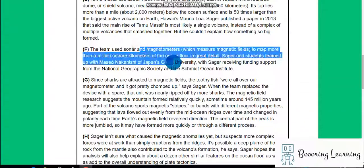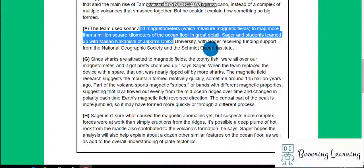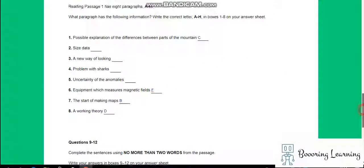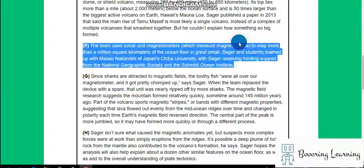Okay. The team used sonar and magnetometers which measure magnetic fields to map more than a million square kilometers of the ocean floor in great detail. Students teamed up with Masao Nakanishi of Japan's University. So it is F, equipment which measures magnetic fields.